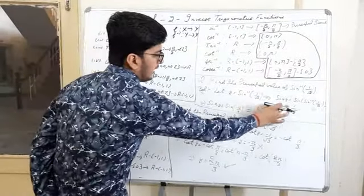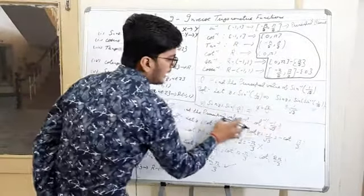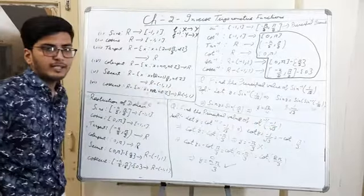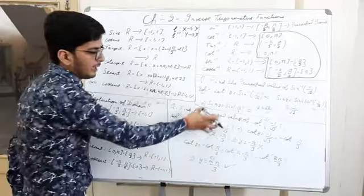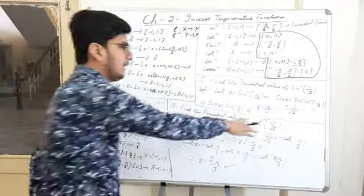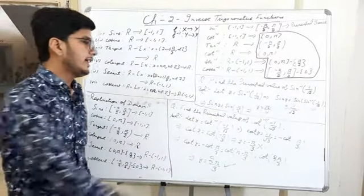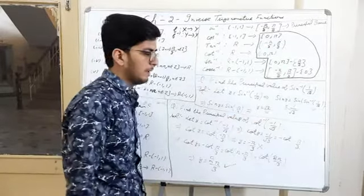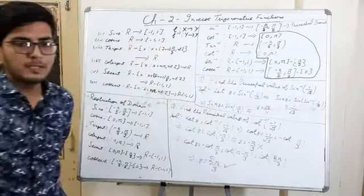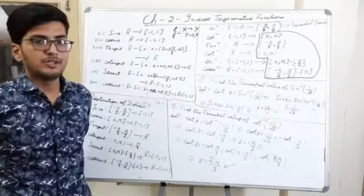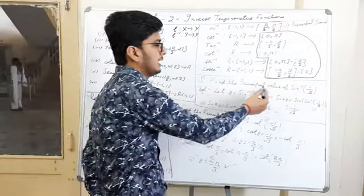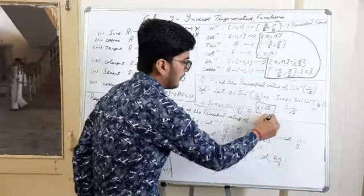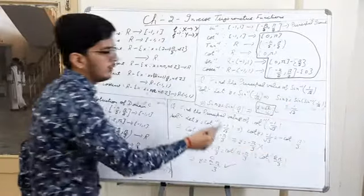So sin y = sin(π/4), which gives y = π/4. Now we check whether this value lies in the principal branch. The principal branch of sin⁻¹ is [-π/2, π/2], and π/4 lies within that interval. So π/4 is the principal value of sin⁻¹(1/√2).